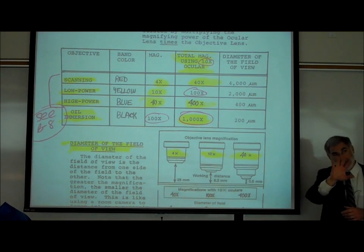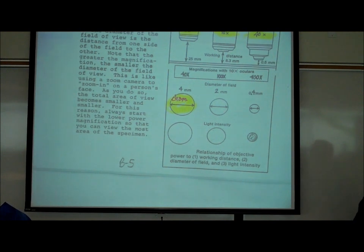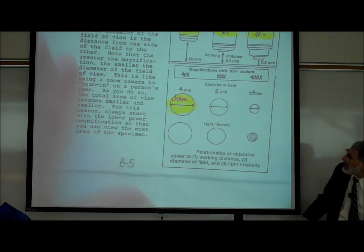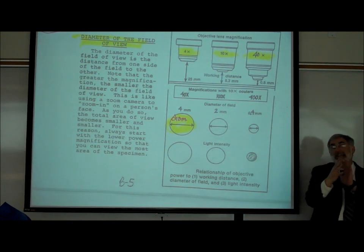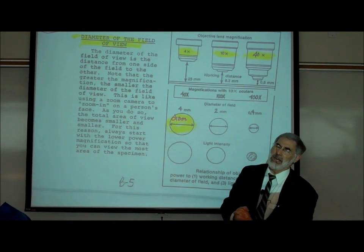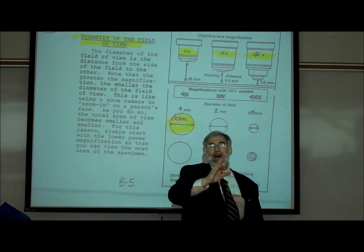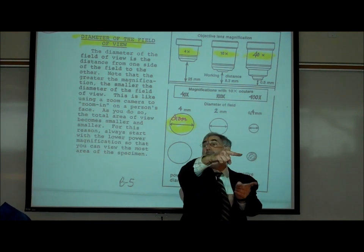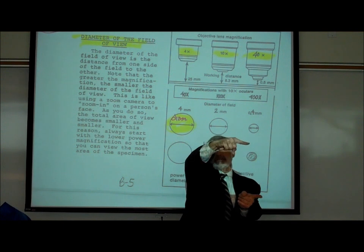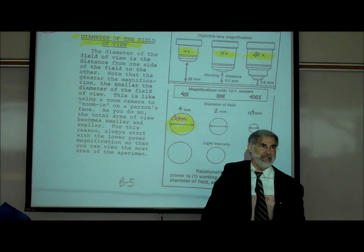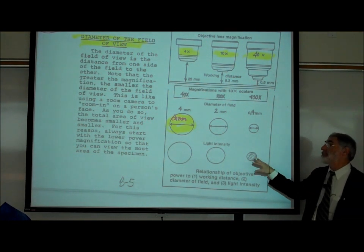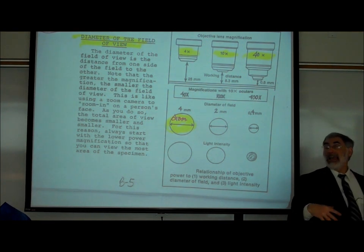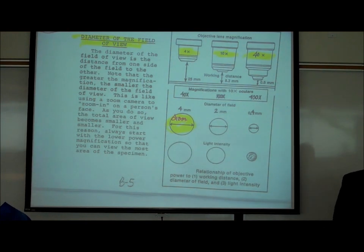You're going to have to use these numbers, so that's why all this is important. Also note: as you increase the magnification, the image generally gets dimmer, because the higher magnification objective lenses are longer and contain more lenses inside. The more light has to travel through lenses, the dimmer it gets, so sometimes you need to increase the light at higher magnification.